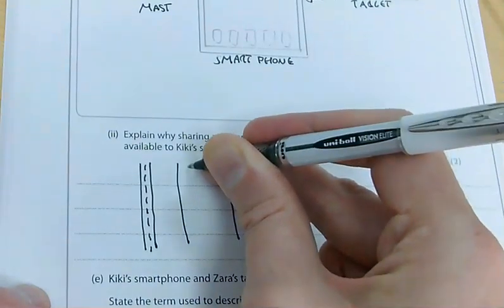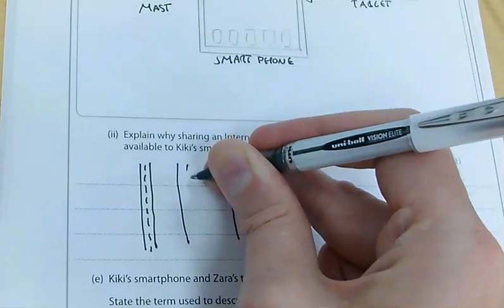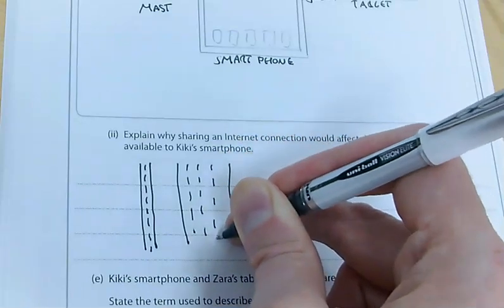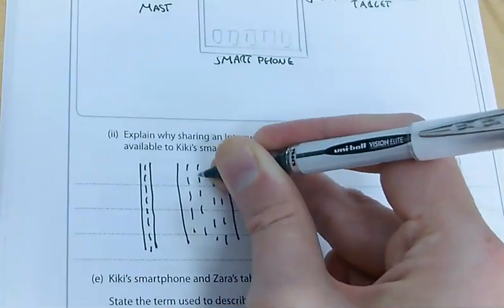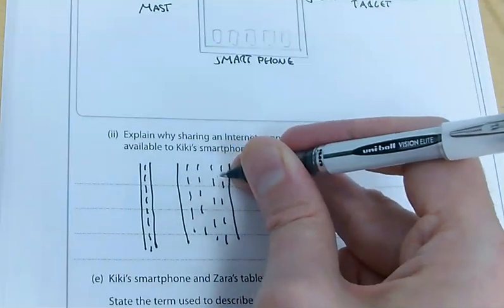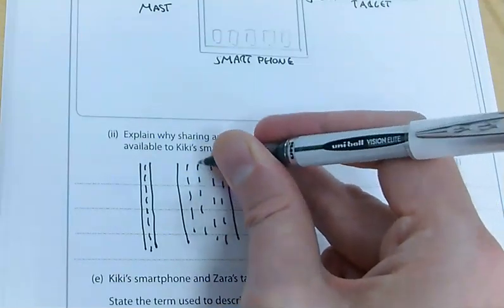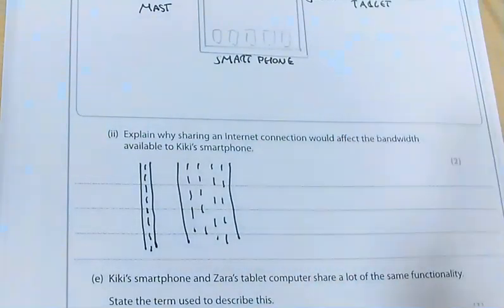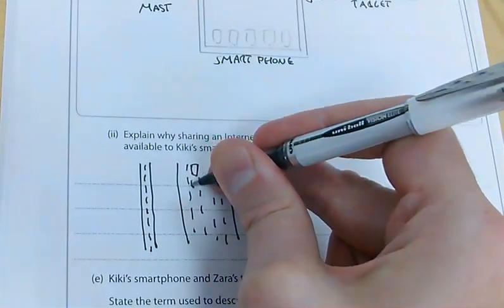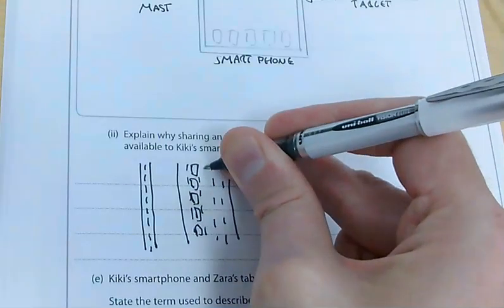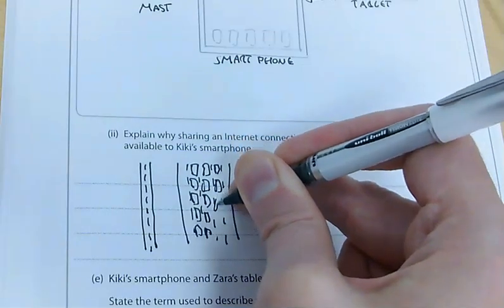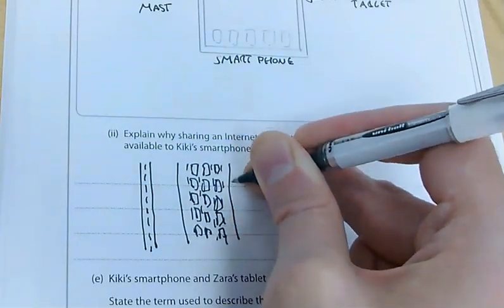If you have much bigger bandwidth, think of a wide motorway with several lanes — cars can move through very quickly because there are lots of lanes to choose from. Now, if this were my bandwidth and I put more cars on there, I'm going to be sharing that road, which is going to slow everything right down.